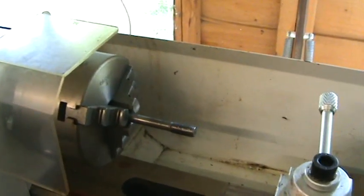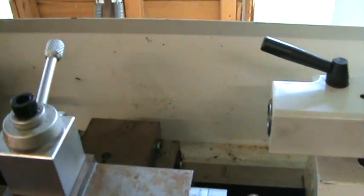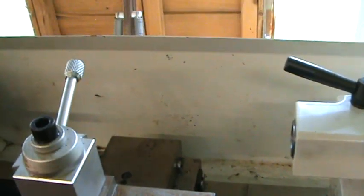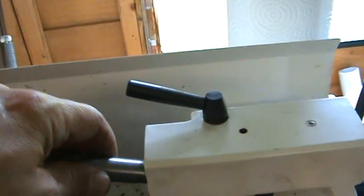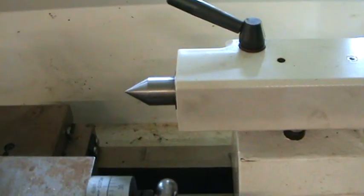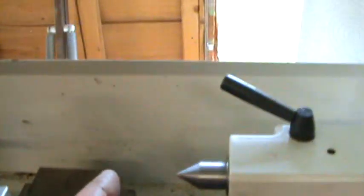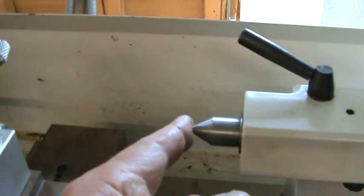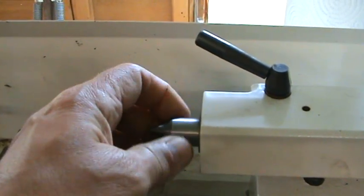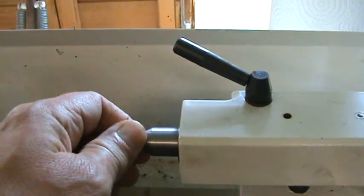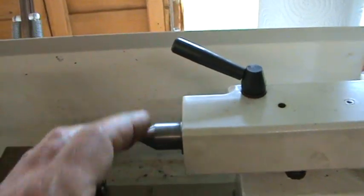The normal fitment you get with these machines from the factory is what they call a center. There's a point on it and normally your work, if you've got a long piece in there, you'd have a little dimple in the end which will fit in there. Now this is a solid piece of metal, so with high speed and a lot of work, there is a chance you could actually fractionally wear the end of it where the dimple is.